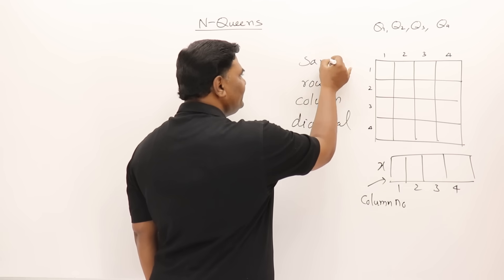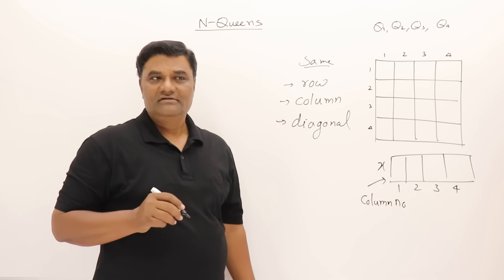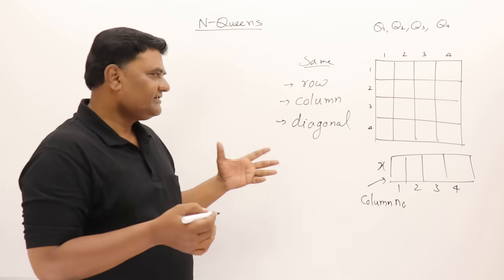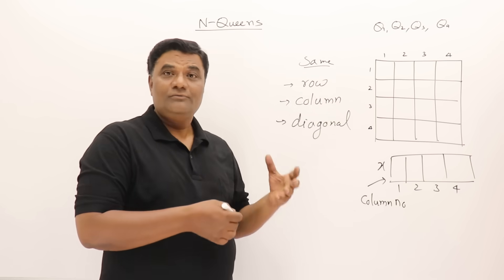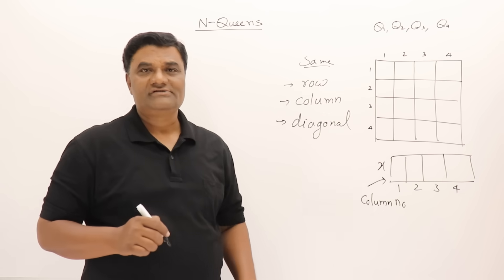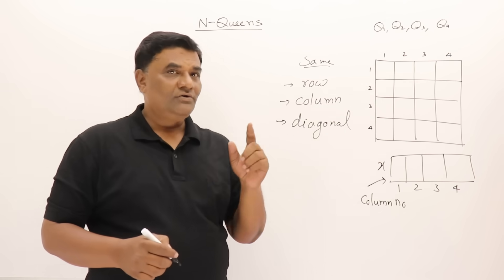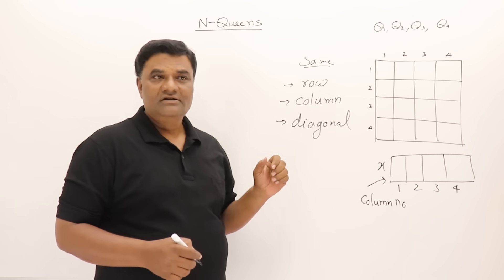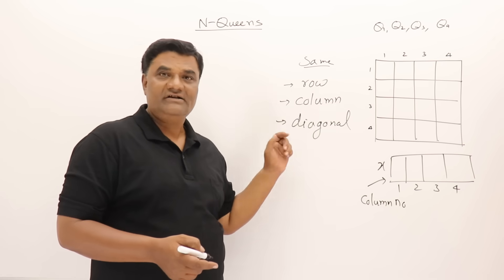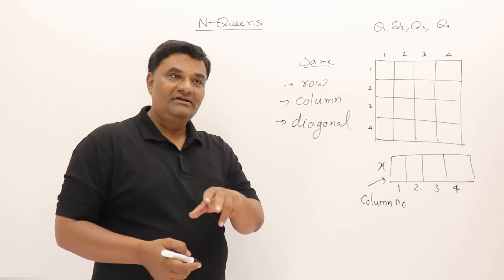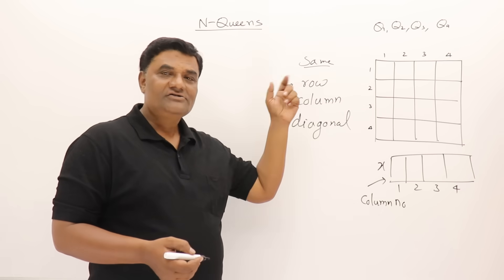We have to avoid queens being in the same row, same column, or same diagonal, and arrange them so they are not under attack. Is it possible? Yes, and we get more than one solution — we want all those solutions. For this type of problem, backtracking is used. We want all possible solutions satisfying this condition, not just one. If we were looking for an optimal solution, we would use dynamic programming. Since we want all solutions, backtracking is used.